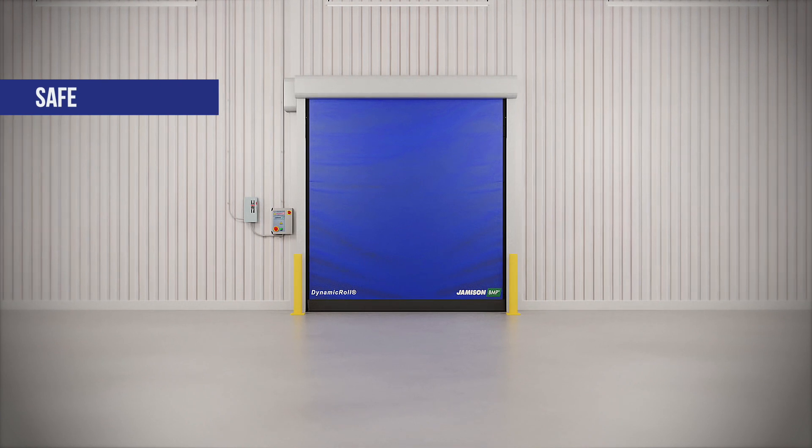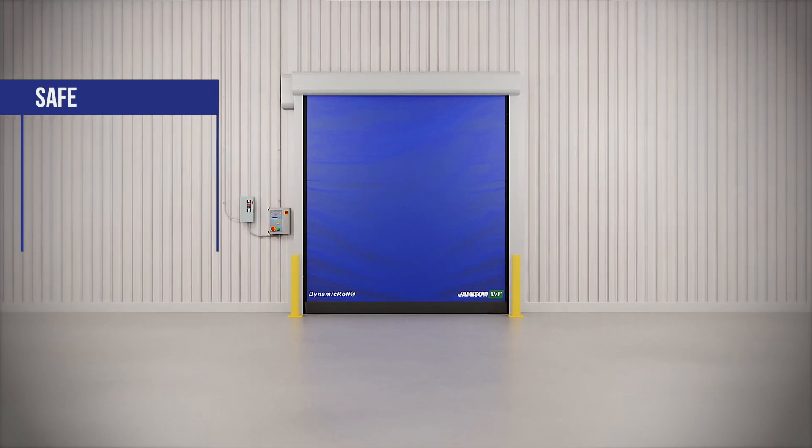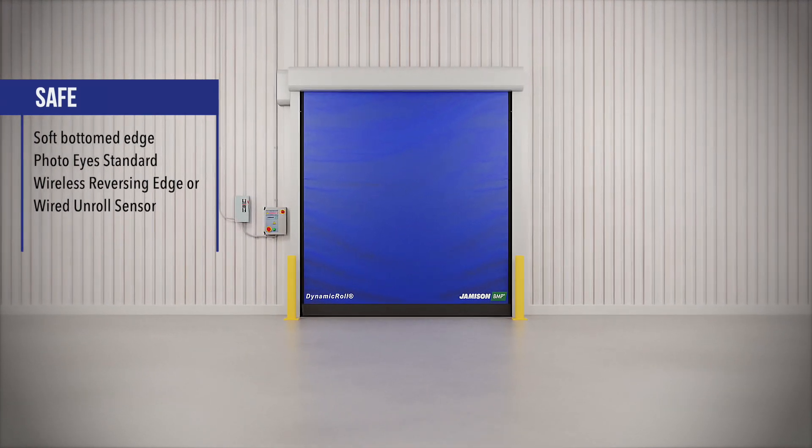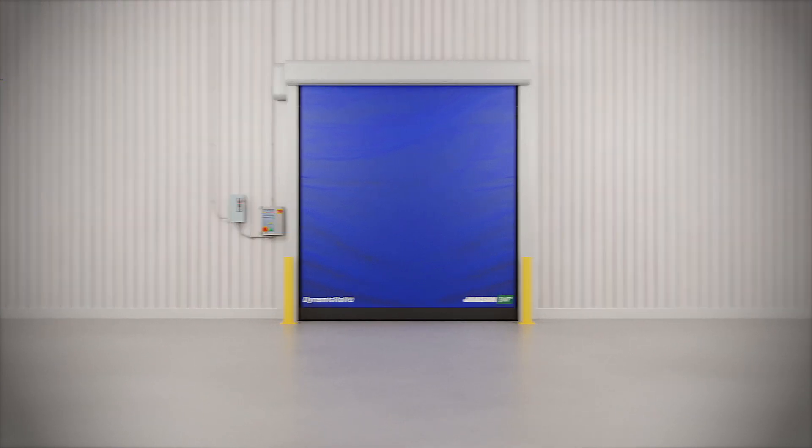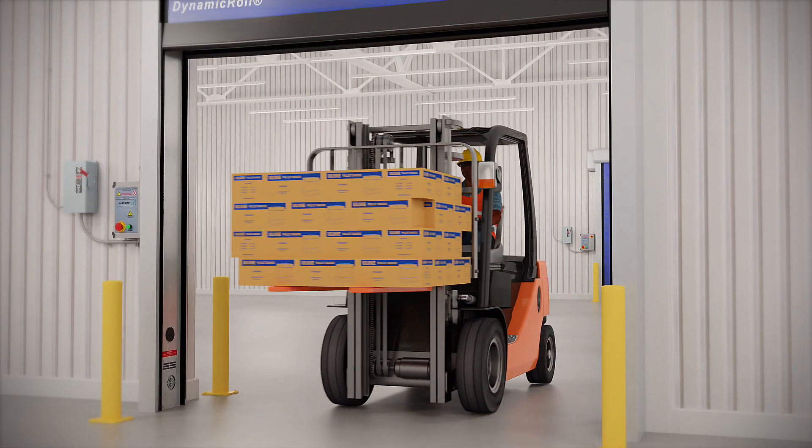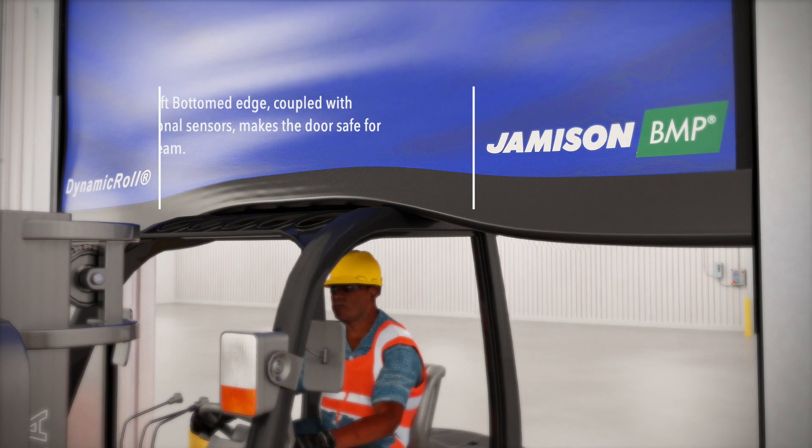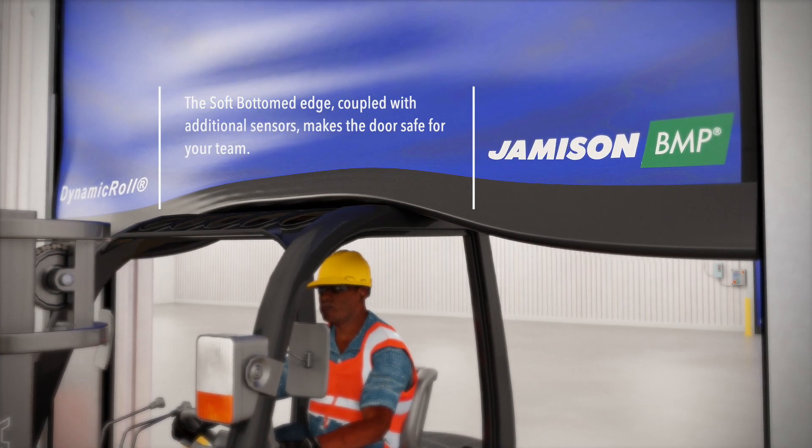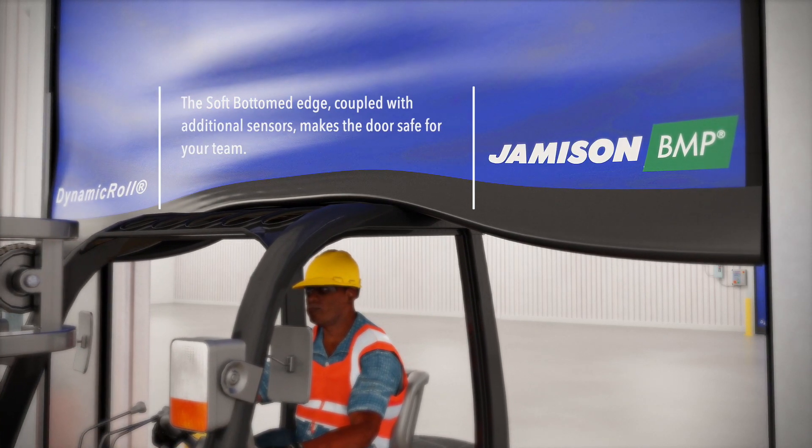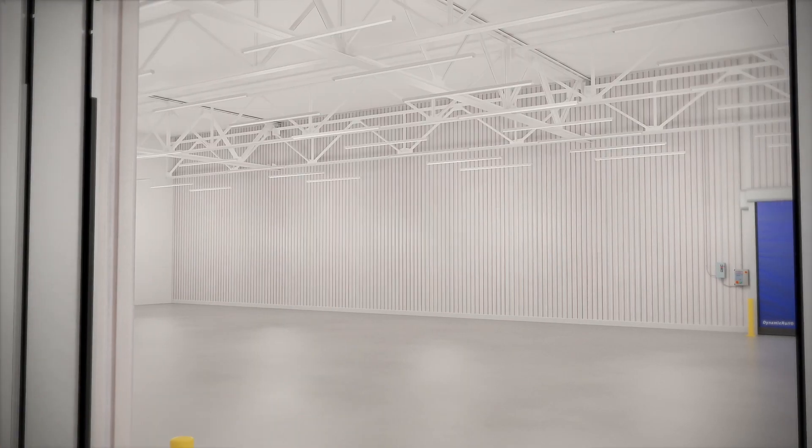The soft bottomed edge is inherently safe because there is no hard edge to impact personnel. One curtain has a reversing edge while the other curtain has a photo-eye as standard safety. Additional safety options are also available, allowing for even more safety customization.